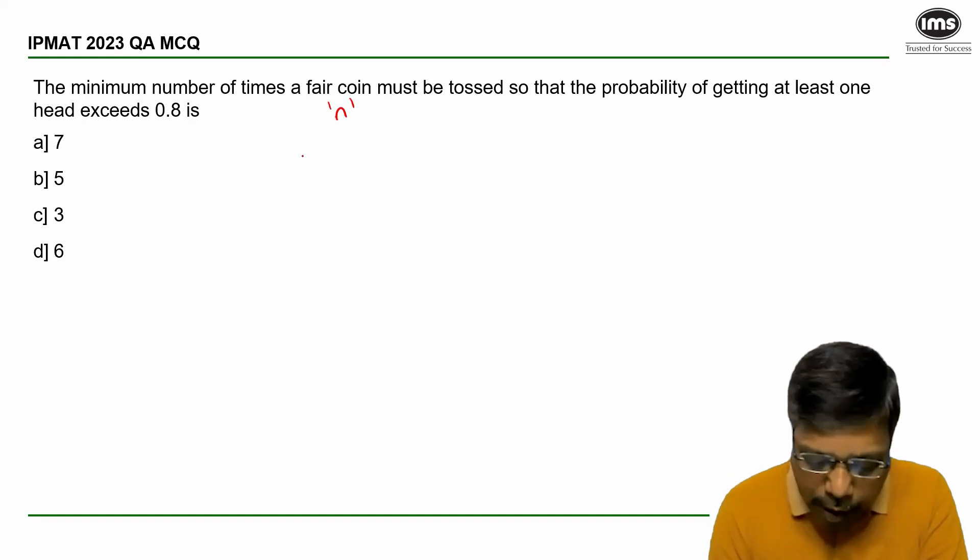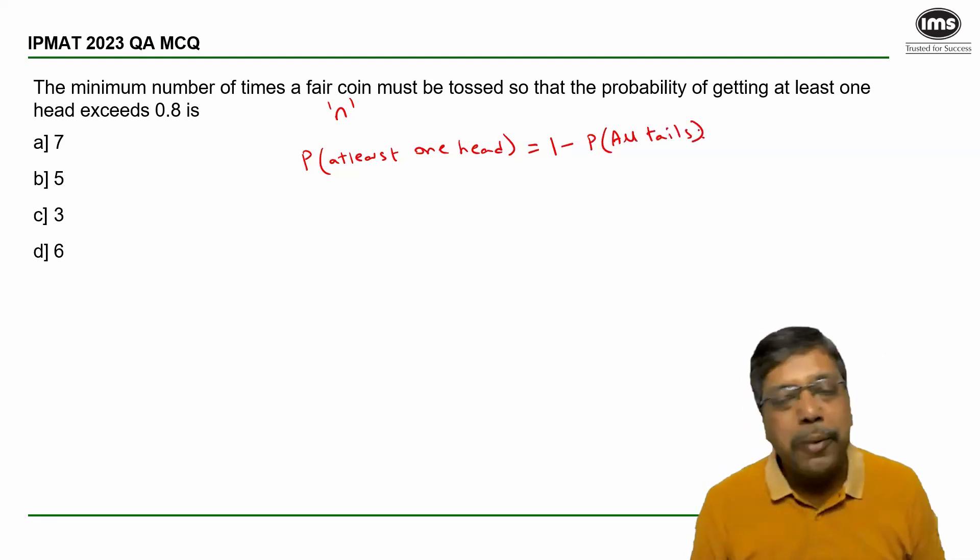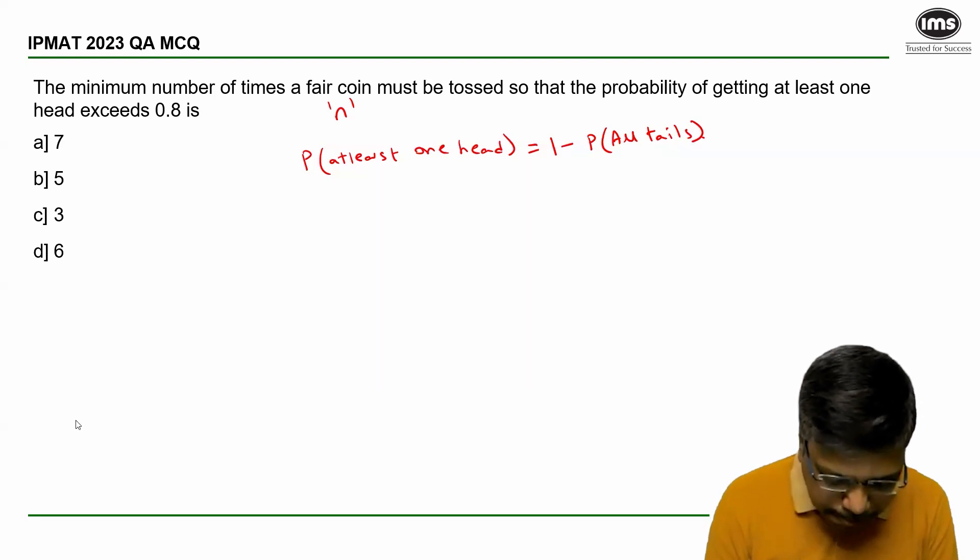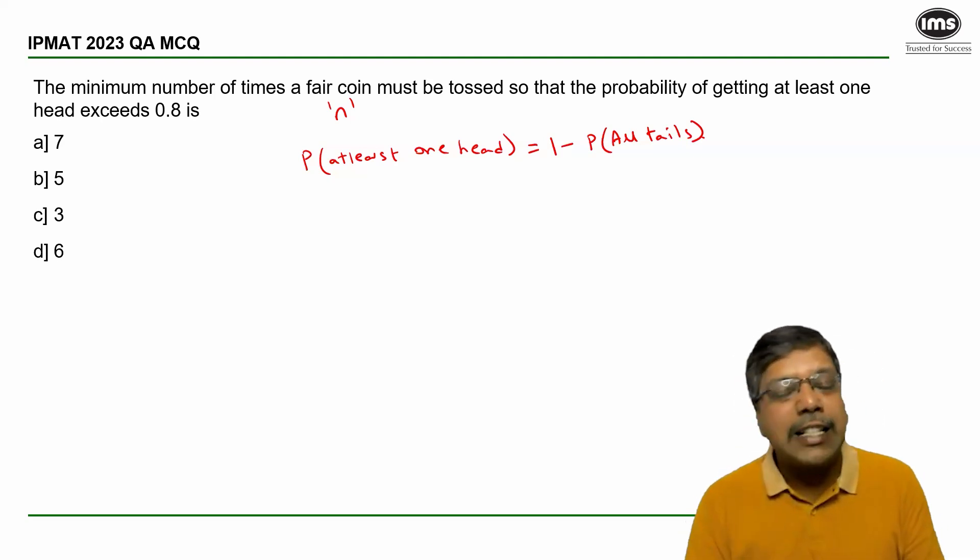I want the probability of at least one head. Can I say it is same as 1 minus probability of all tosses resulting in tails? I repeat: I want to calculate the probability of getting at least one head when I toss the coin n times. Isn't it same as 1 minus probability that all the n tosses result in tails?